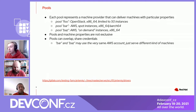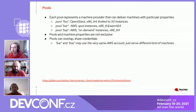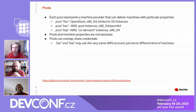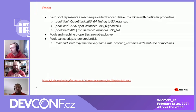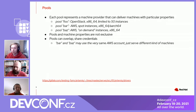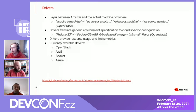For communicating with machine providers, we needed to create a unified interface, so we created drivers. It's a layer between Artemis and the actual machine providers. They take care of running commands for creating instances in the providers. They also translate generic environment specification to cloud-specific configuration — for example, the OpenStack driver will translate a Compose to an OpenStack image name and hardware specification to an OpenStack flavor. Drivers also provide resource usage metrics such as number of CPU cores, used memory, number of instances, etc., as well as limits metrics to make sure we are not overusing our providers. Currently we have available drivers for four machine providers: OpenStack, AWS, Beaker, and Azure.